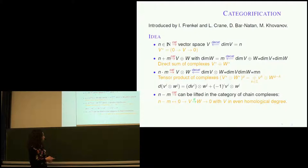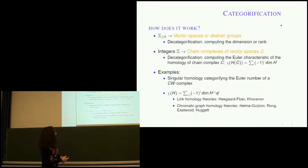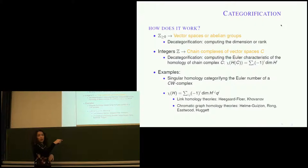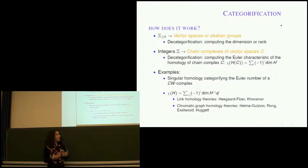So what can we do with this construction? If we have positive integers, we have vector spaces or abelian groups — decategorification is computing the dimension, or if working with groups, you take the rank. If you have integers, you take chain complexes of vector spaces or groups, and decategorification takes the form of computing the Euler characteristic. You take the chain complex, compute its homology, and the Euler characteristic of that homology equals whatever you started with.